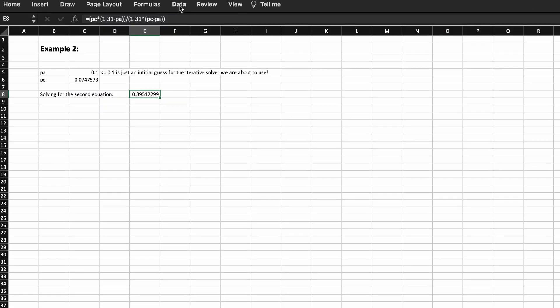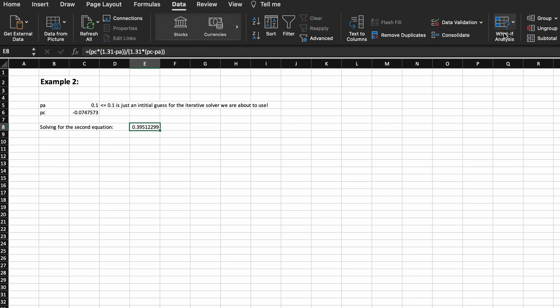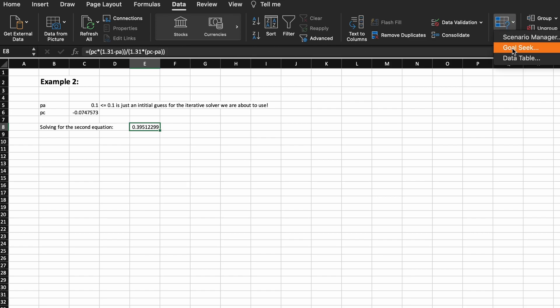Now we need to use Excel's goal seek function. This will iteratively solve for our solution using a few parameters that we give to Excel. To use this let's go to data, then what if analysis, and then goal seek. Just note that this may be slightly different on Windows, but I'm sure a quick Google search will tell you how to do this on Windows.